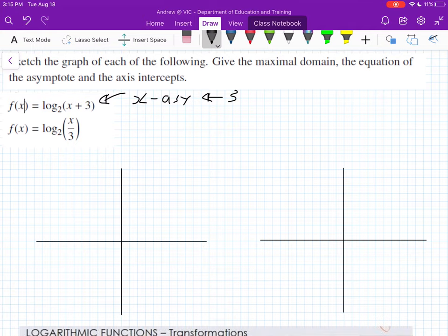So just drawing this on our graph, so it goes 1, 2, 3. That means our x-asymptote has moved to here. And we call this x is equal to negative 3.